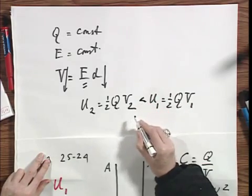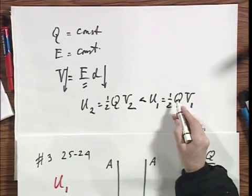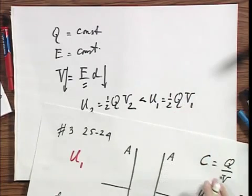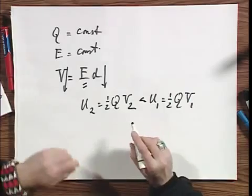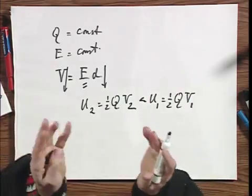So the two, this is smaller than that. Now since U2 is smaller than U1, the plates pull on each other.